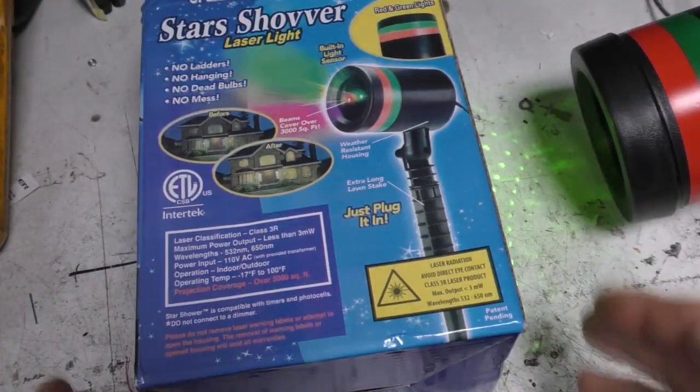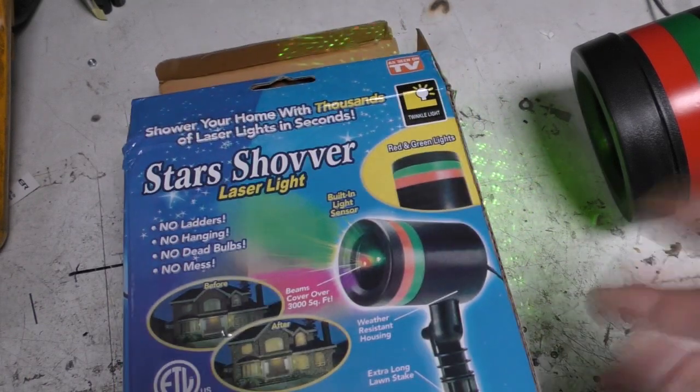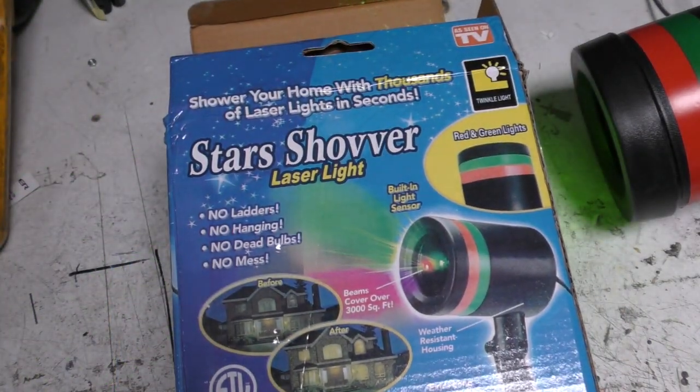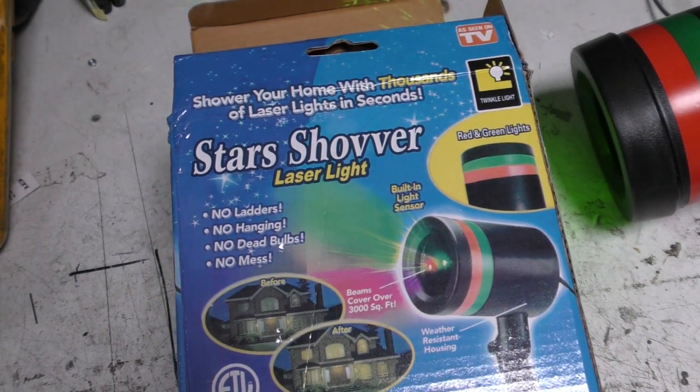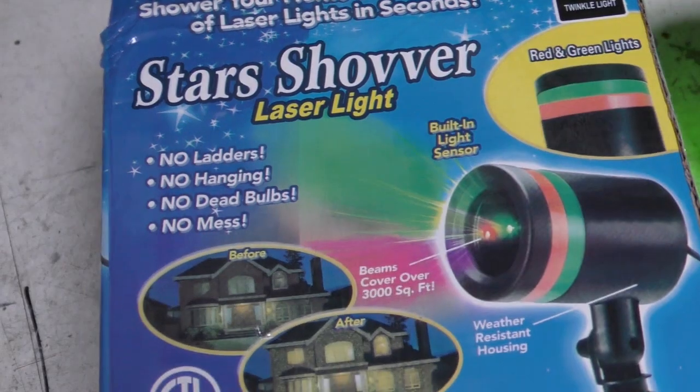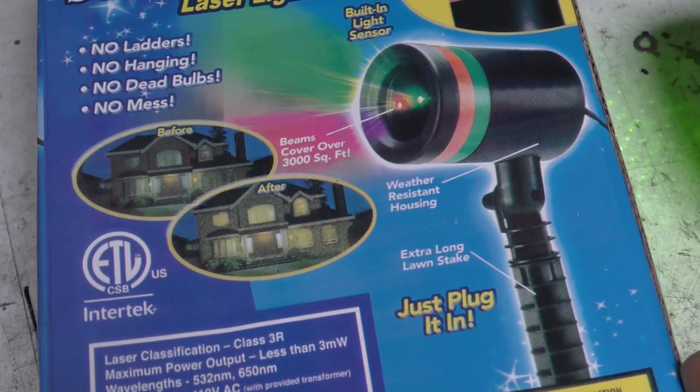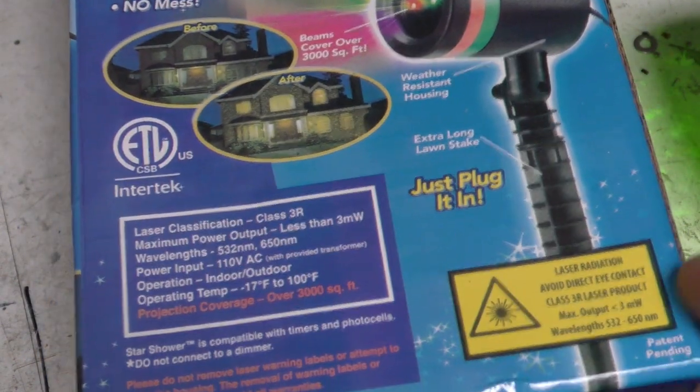What turned up was this. This is a different one with a moving pattern, whereas the other one was a static pattern which I think actually look nicer. This is a Stars Shower laser light. I suspect they probably meant shower but the typo got in there. No ladders, no hanging, no dead bulbs, no mess. It's nice that you can light up your house just by plonking this thing in the garden.